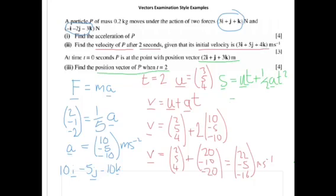And we're just going to fill in for that. Now, the u, the initial velocity we already know, is 3, 5, and 4. And we're going to multiply that by the time 2 seconds. Plus, again, 1 half times t squared is 1 half times 2 squared, which is 2. And the acceleration we've given is 10, minus 5, and minus 10.